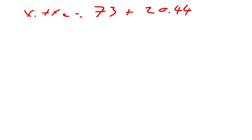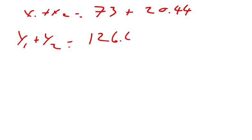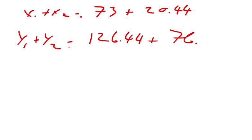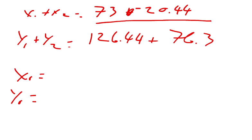So, that equals 73 plus 20.44, I need to find my Y1 plus my Y2. So, that equals 126.44 plus 76.3. And so, my resultant X and my resultant Y. Now, before we go any further, let me point something out, because I almost missed it myself. On our X values, you gotta remember that this X2 value is in the negative X direction. So, we need to make sure that we reflect that and subtract.